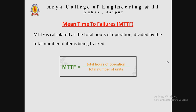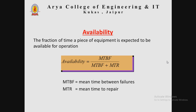The third metric is Mean Time to Failures (MTTF). Mean Time to Failures is calculated as the total hours of operation divided by the total number of items being tracked. Mathematically, it is defined as follows.